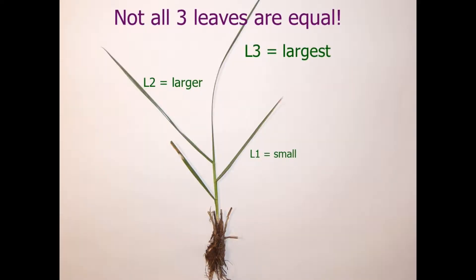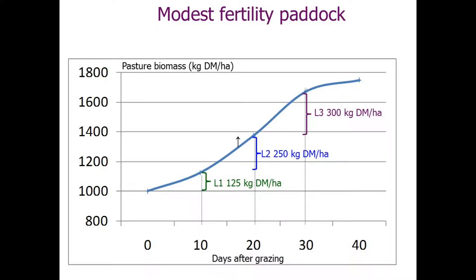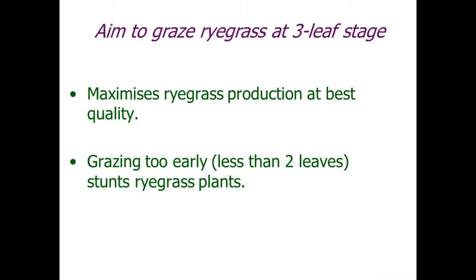The reason for that principle is that in a ryegrass plant, the second and third leaves get bigger. With that third leaf emerging — and I've got an example here, this is the second leaf and the third leaf coming out — the third leaf has 50% of the dry matter of that growth period since the last grazing. So as managers, we've got to be very patient to let that third leaf emerge where we get most of our dry matter.